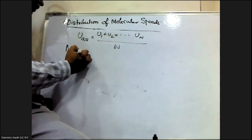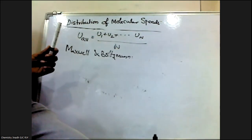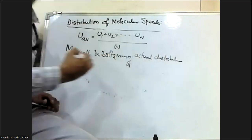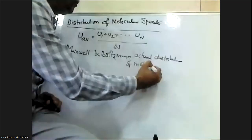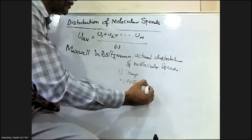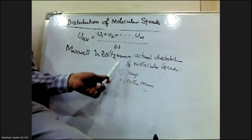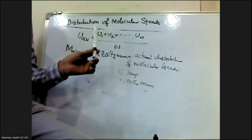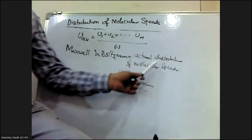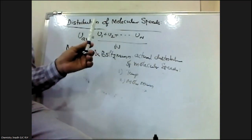The two scientists Maxwell and Boltzmann have shown the actual distribution of molecular speeds. They showed that the distribution of molecular speeds depends on two factors: one is temperature, and the second one is molar mass of the gas.